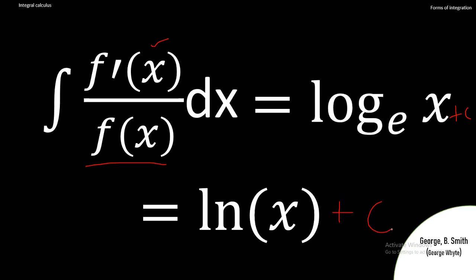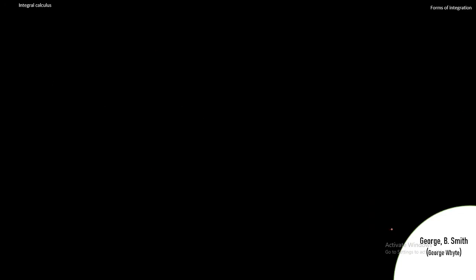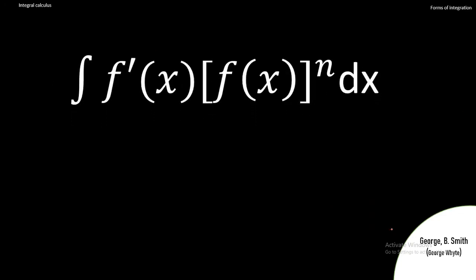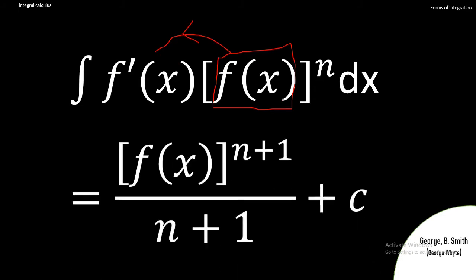Now in this video we are going to look at what happens when we have a product. If you have a product of two functions where differentiating what's inside the bracket gives you what is outside, then the answer to this integral is simply: take the power n, increase it by one to get n plus one, then divide by that new power n plus one, and add plus c for the indefinite integral.